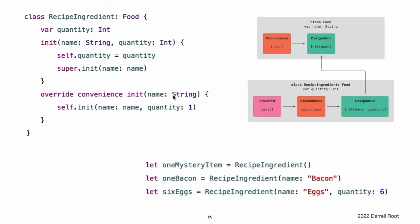The init(name:) convenience initializer provided by RecipeIngredient takes the same parameters as the init(name:) designated initializer from Food. Because this convenience initializer overrides a designated initializer from its superclass, it must be marked with the override modifier. Even though RecipeIngredient provides the init(name:) initializer as a convenience initializer, RecipeIngredient has nonetheless provided an implementation of all of its superclass's designated initializers.